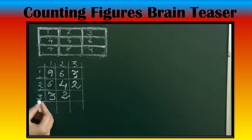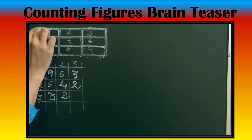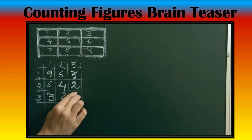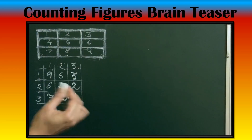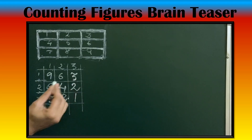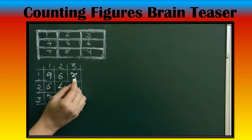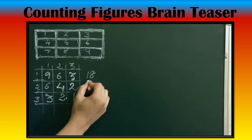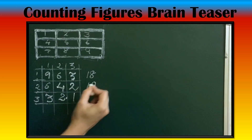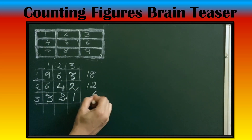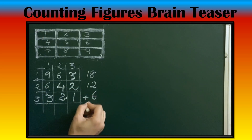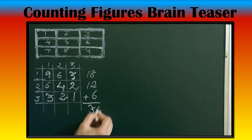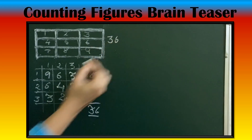Then 3 rows, 3 columns — that is the whole rectangle, so there is 1 big rectangle. The total is 9 plus 6 plus 3, which is 18; then 6 plus 4 plus 2, which is 12; then 3 plus 2 plus 1, which is 6. Adding everything gives 36 rectangles in this figure.